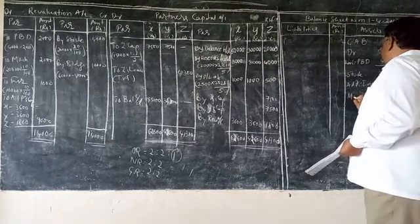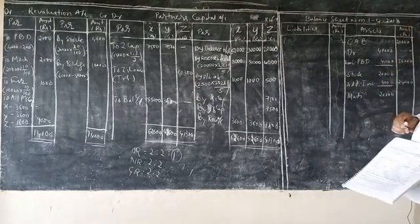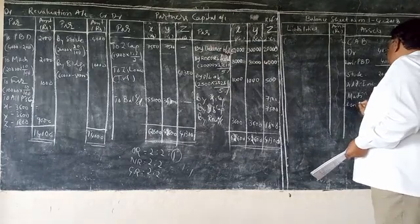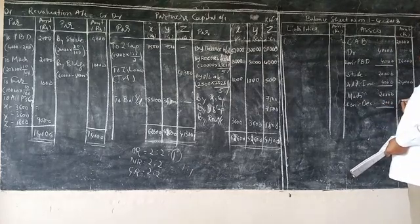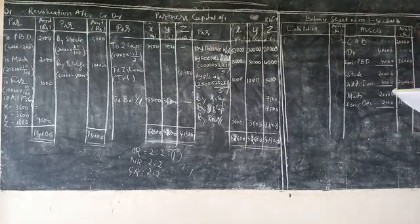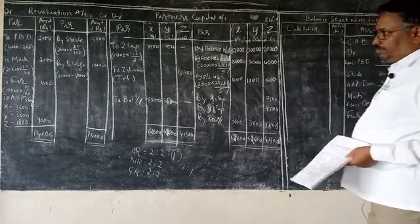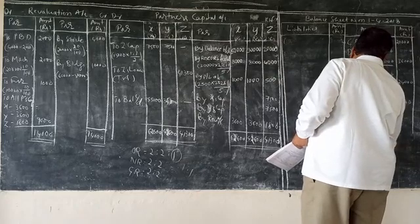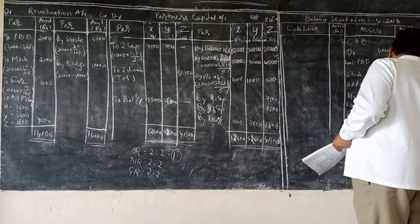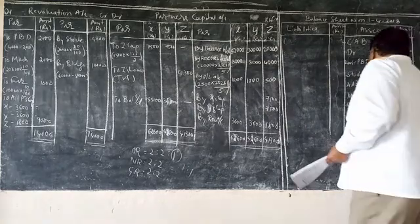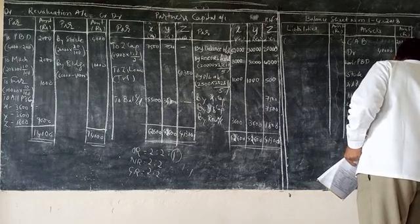Machinery 20,000 less decrease 2,000 equals 18,000. Furniture 10,000 less decrease 1,000 equals 9,000. Building 50,000, revalued at 60,000.